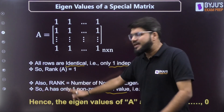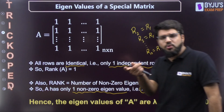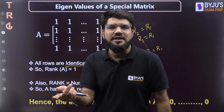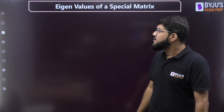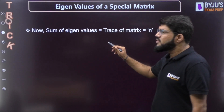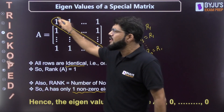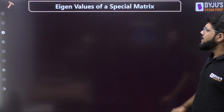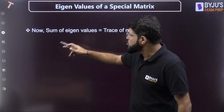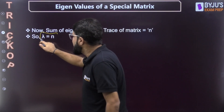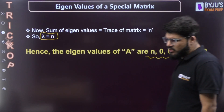So the eigenvalues of A are: λ, 0, 0, 0, 0, … (n−1 zeros). I only need to find λ. What is the sum of eigenvalues? As explained in another Trickopedia video, the sum of eigenvalues equals the trace of the matrix — the sum of diagonal elements. All diagonal elements are one, and there are n of them, so the trace equals n. Therefore, λ + 0 + 0 + … = n, which gives λ = n.